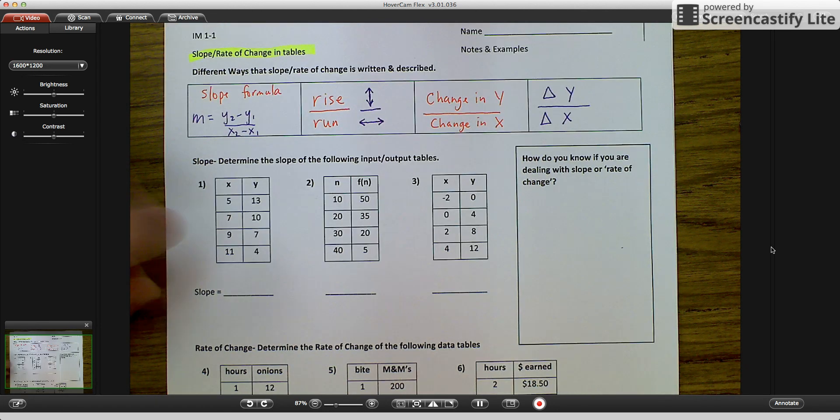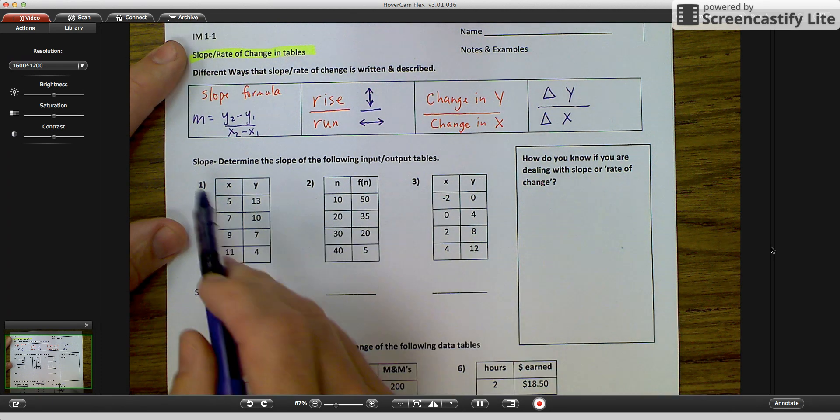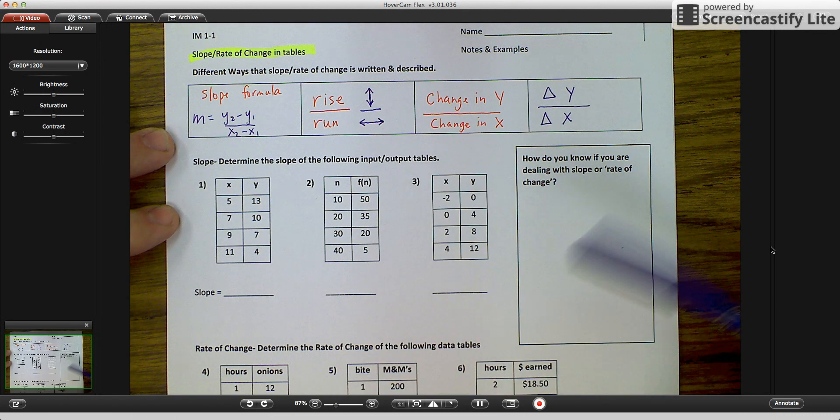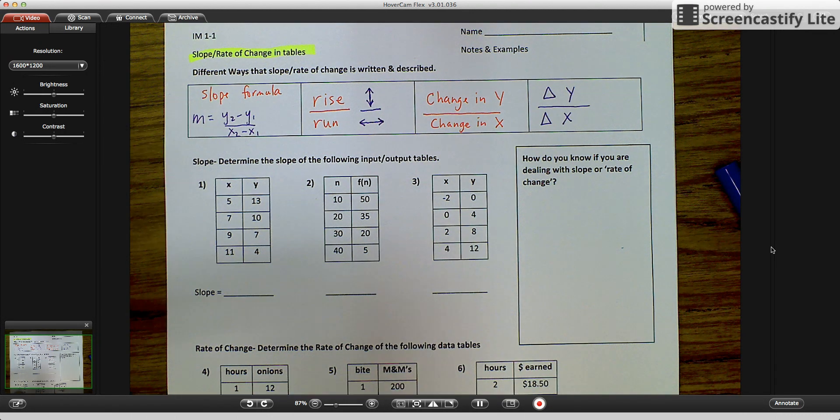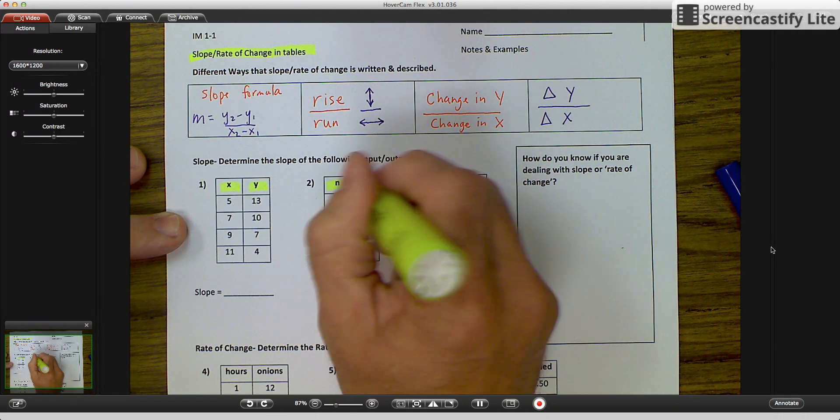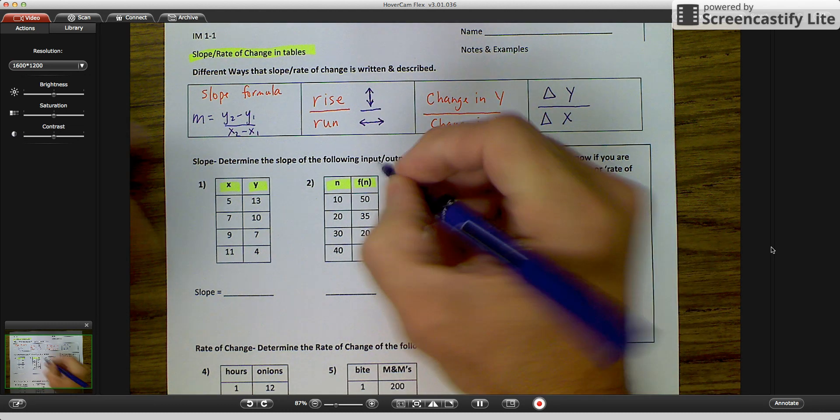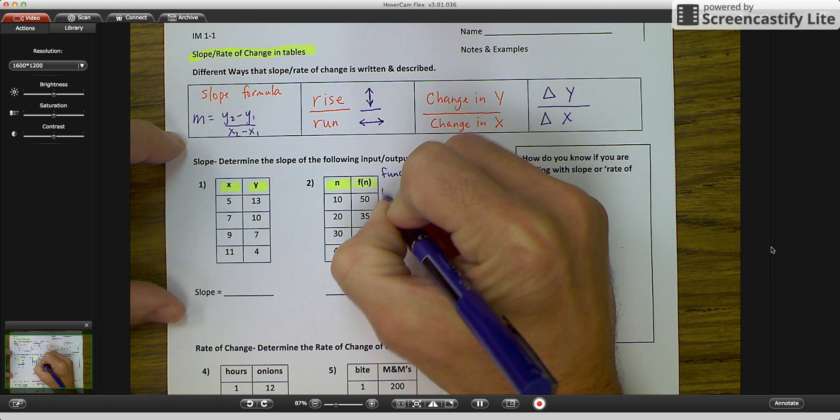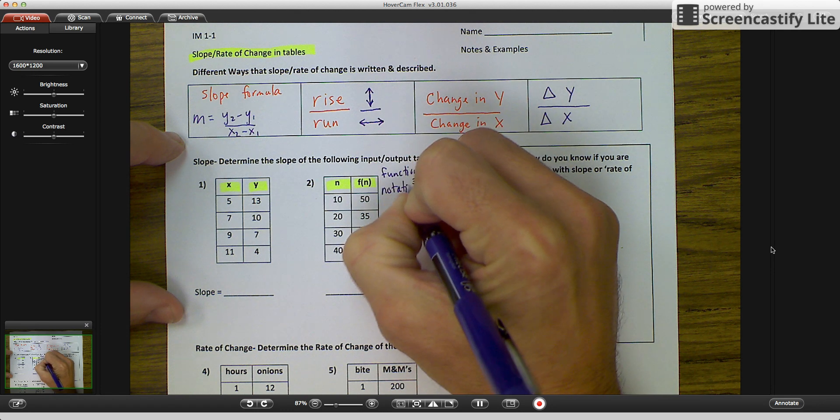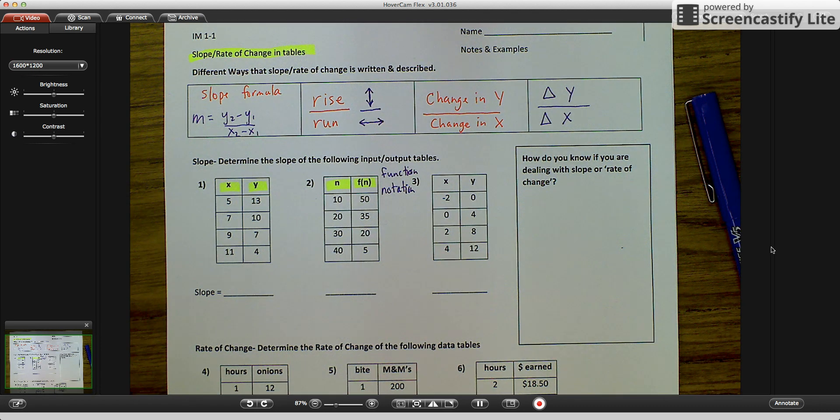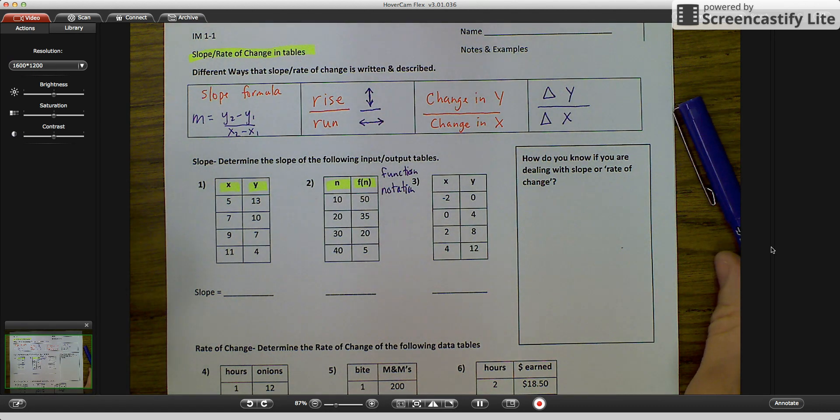Let's look at the first one we have down here. It says slope: Determine the slope of the following input output tables. So when you're finding slope, you are given input output tables. And input output tables either have an x and a y or something that looks like n and f of n. And I'm going to tell you right now that this is written in function notation. We're going to get into function notation later on, but just know that it's out there and it operates the same as x and y.